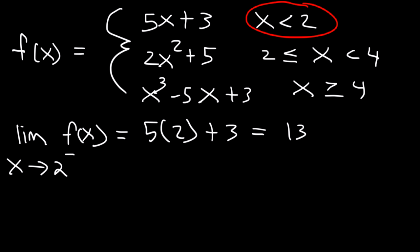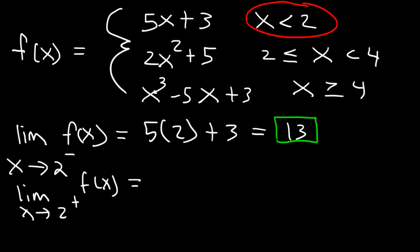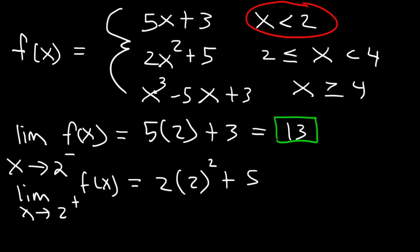What is the limit as x approaches 2 from the right of f(x)? On the right side, which is greater than 2, we need to use 2x squared plus 5. So it's 2 times 2 squared plus 5. 2 squared is 4, 2 times 4 is 8, and 8 plus 5 is 13.